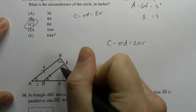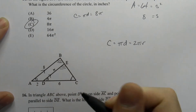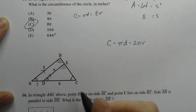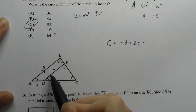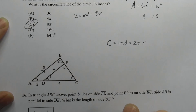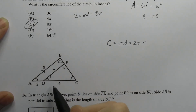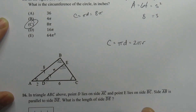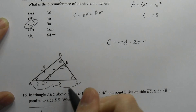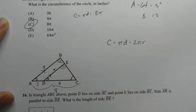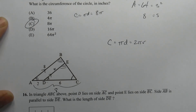We need to find side DE, which we'll label X. Setting up the proportion: DE to AB is X to 8, which equals the short side 6 to the long side 8. So 8X equals 48, and X equals 6. We're done.